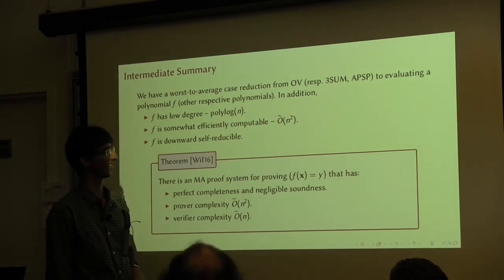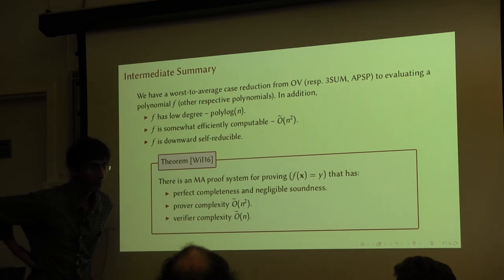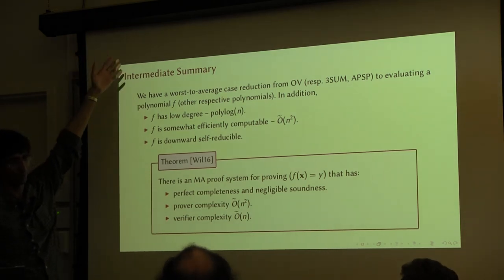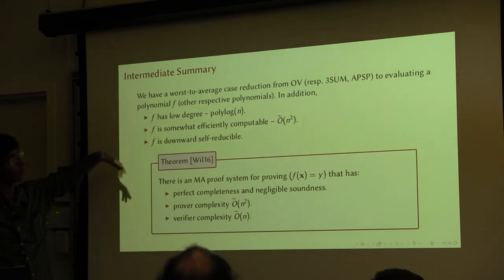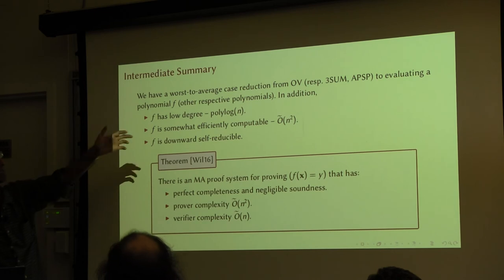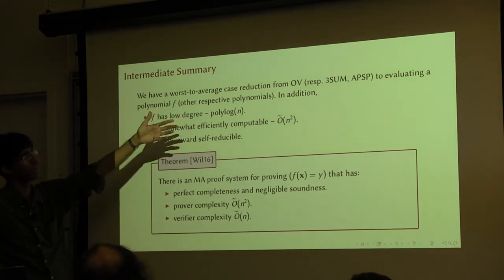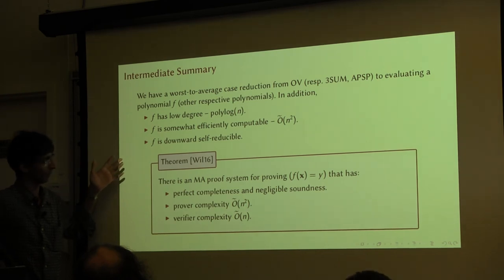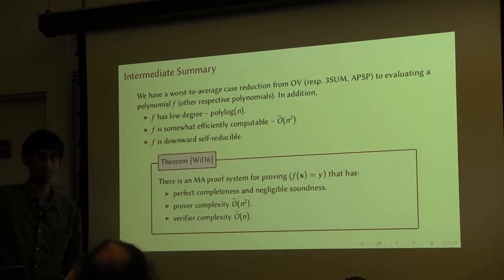The soundness error is negligible. For the other problems like 3SUM and all-pairs shortest path, you also construct different polynomials using the same technique — you write down a polynomial that evaluates the answer for those problems on certain instances. It turns out you can do this, which is actually fortunate because it's not clear that there has to be a polynomial of this small degree which works through a reduction for any of these problems. This theorem would cover those as well, giving a similar certifiability statement.